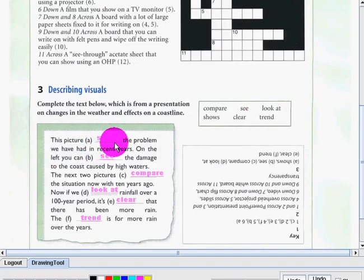This picture shows the problem we have had in recent years. On the left, you can see the damage to the coast caused by high waters. The next two pictures compare the situation now with 10 years ago. Now, if we look at rainfall over a 100-year period, it's clear that there has been more rain. The trend is for more rain over the years.